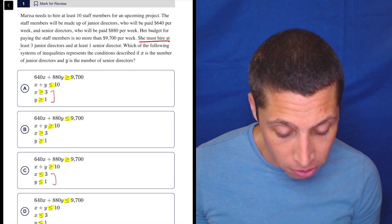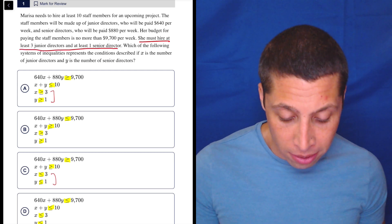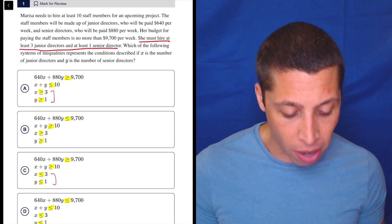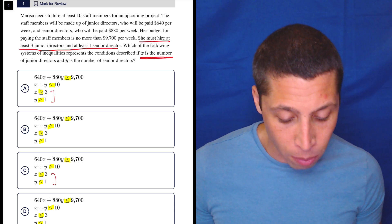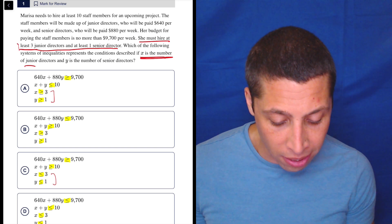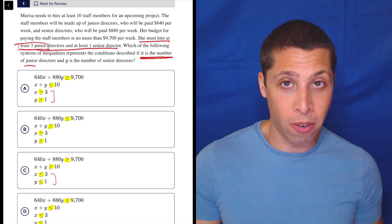She must hire at least three junior directors and at least one senior director. So right there, that seems important. Which of the following systems of inequalities represents this condition described if X is the number of junior directors and Y is the number of senior directors? Let's just focus on one of those. Let's focus on the X. So X is the number of junior directors and she needs at least three junior directors.